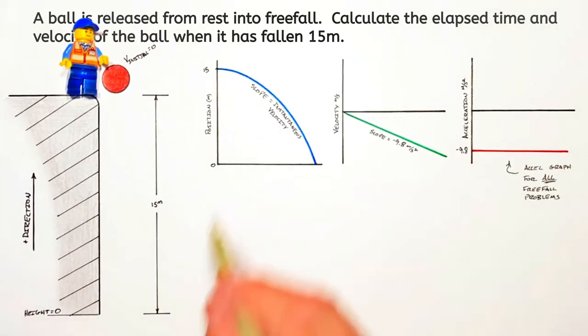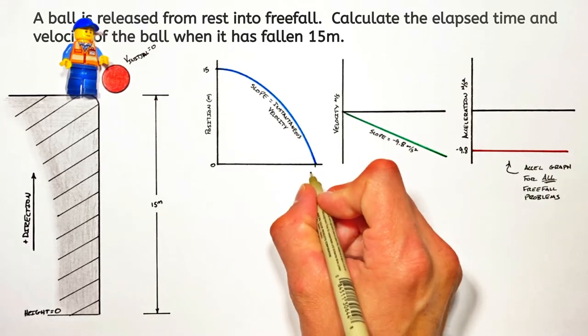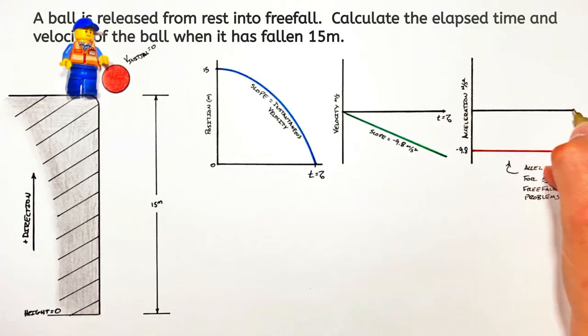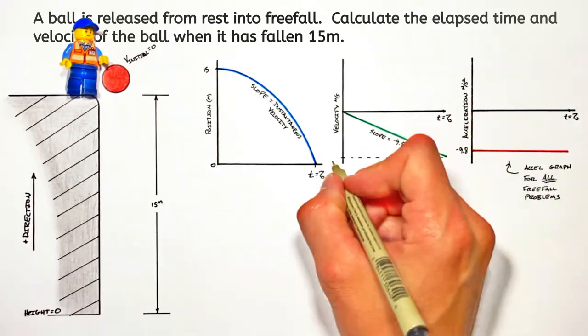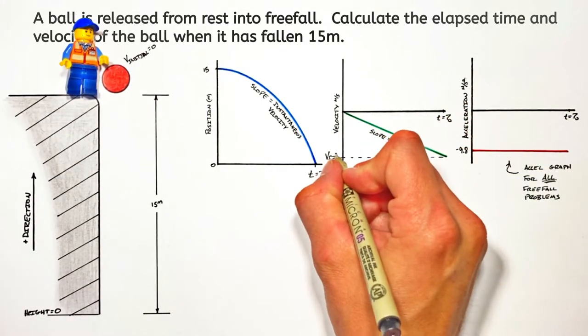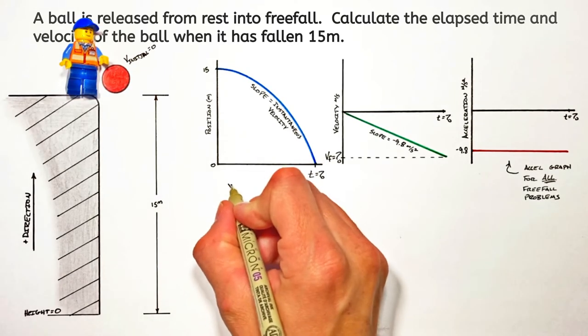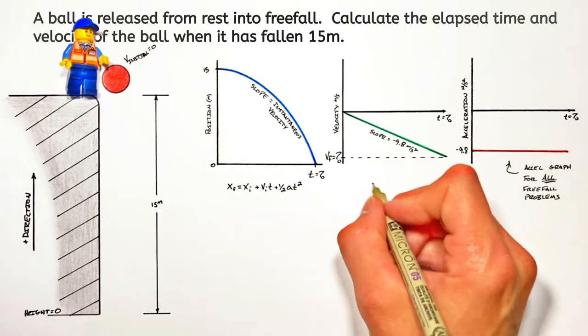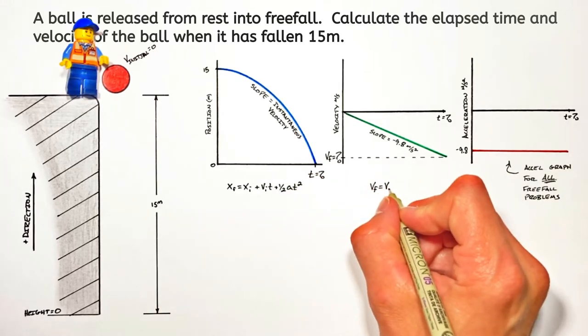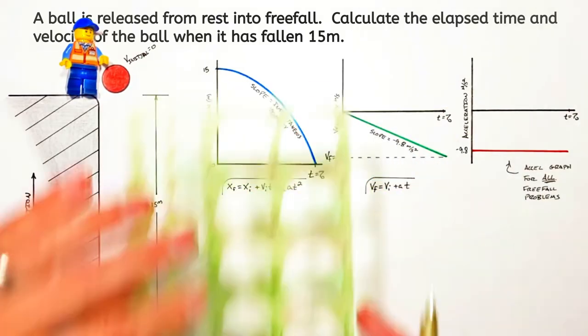Now we're trying to solve for the total time the ball spends falling, as well as the final velocity of the ball. The time shows up on each of the graphs. The final velocity shows up right here on our velocity graph. Now remember, there's a kinematic equation that goes with both the position graph and another that goes with the velocity graph. And we can use those equations, as well as the information given to us in the problem, to solve for that total time, as well as the final velocity.